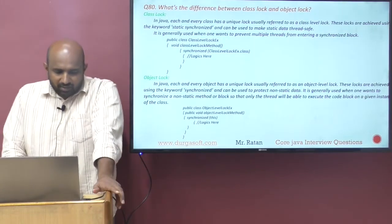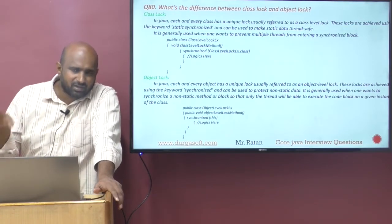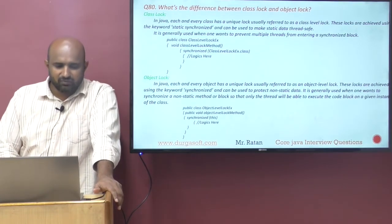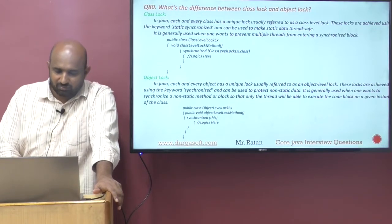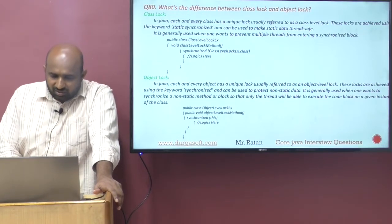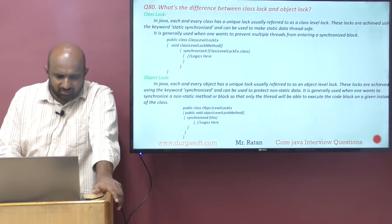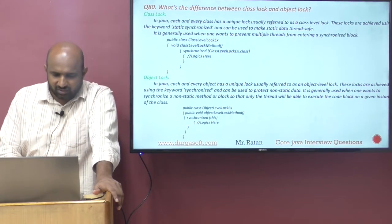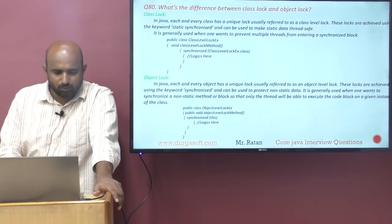Object level lock means each and every object has a unique lock. Each and every class also has a unique lock, called the class level lock. Every object having a unique lock is referred to as the object level lock. These locks are achieved using the keyword synchronized, and it is used to prevent non-static data — it is for non-static data.